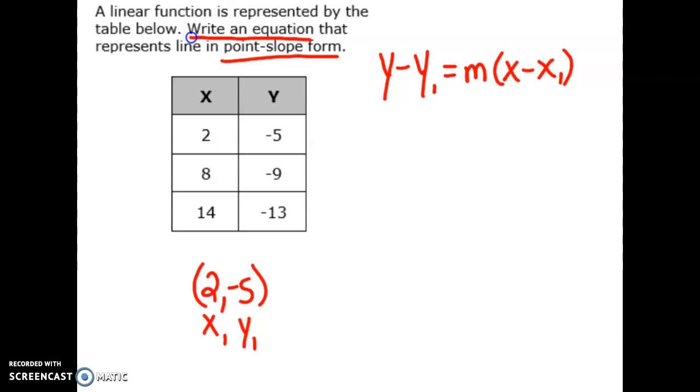But you also need the slope, the rise over the run. Or in this case for a table, the change in the y's divided by the change in the x's. So I need to see how much are the y's changing and how much are the x's changing and then divide them accordingly.